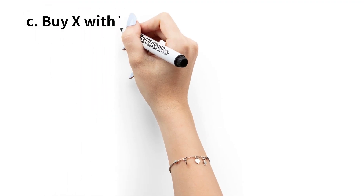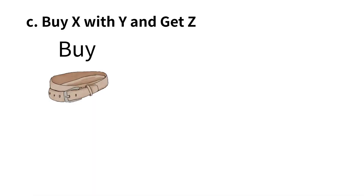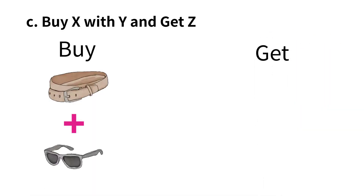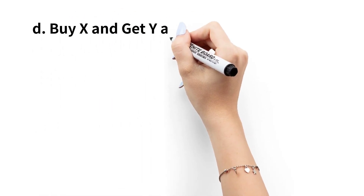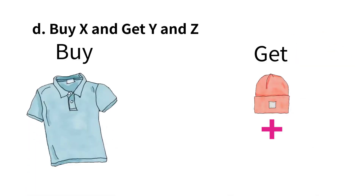For buy X with Y and get Z, if you buy a belt along with a pair of sunglasses, you are eligible to get a red t-shirt as a free gift. For buy X and get Y and Z, if you buy a blue polo t-shirt, you are eligible to get a beanie and a cap as free gifts.